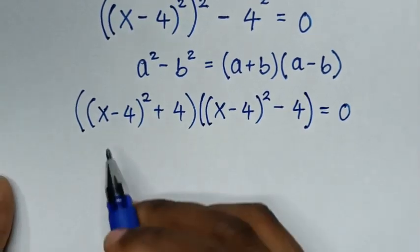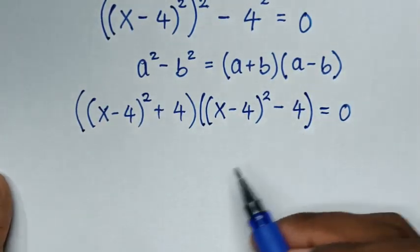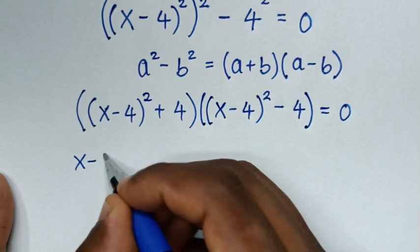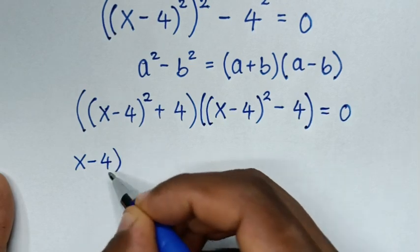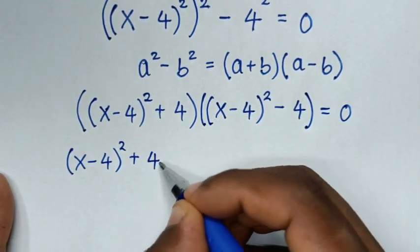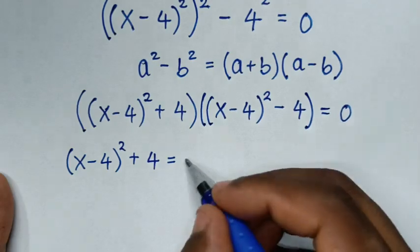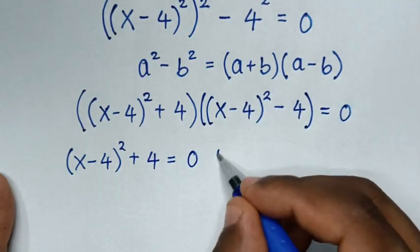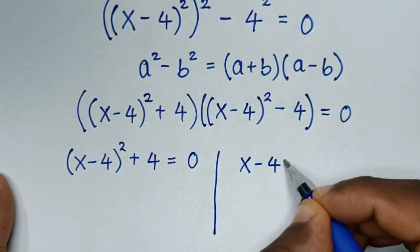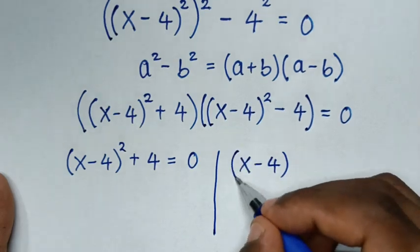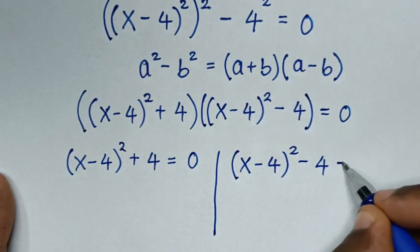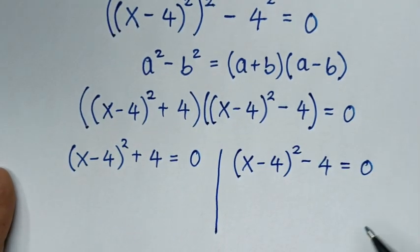From here we'll have two solutions: the first solution is (x minus 4) bracket squared plus 4 equals 0, and the second solution is (x minus 4) bracket squared minus 4 equals 0.